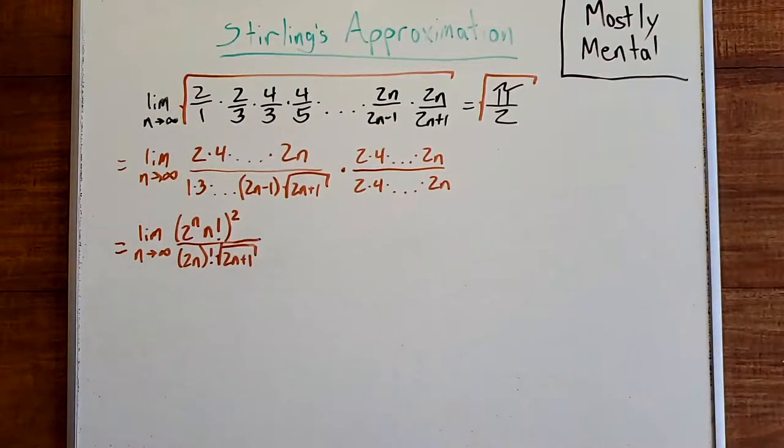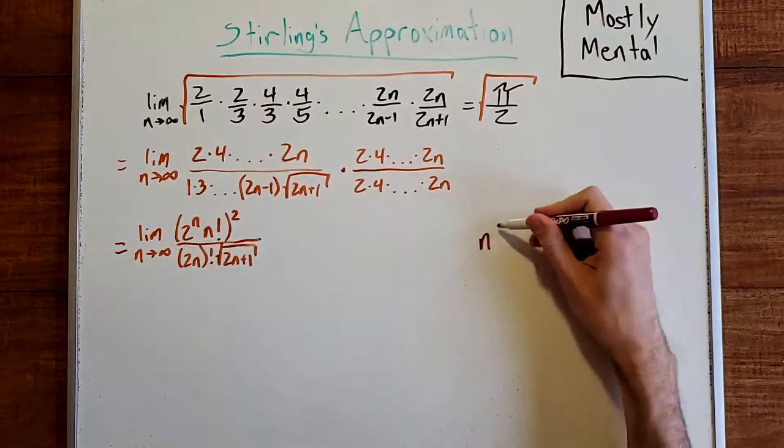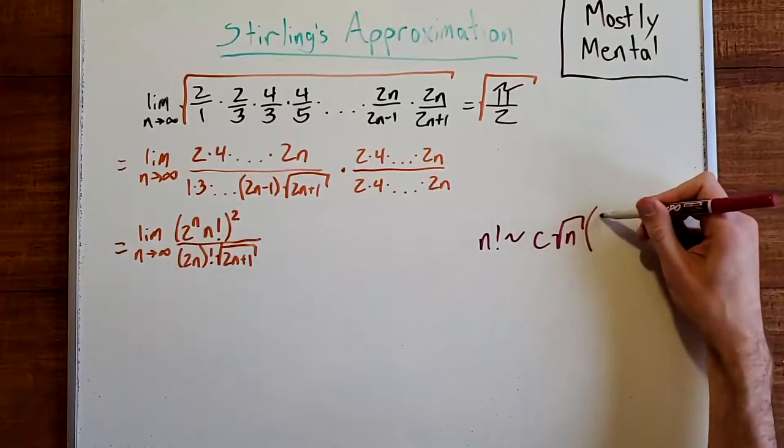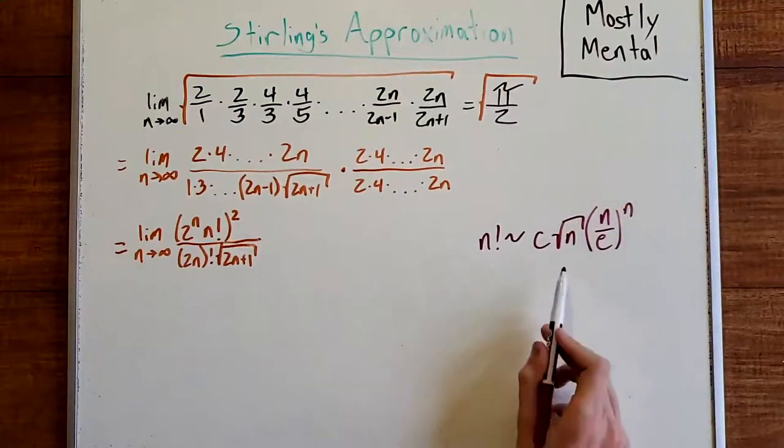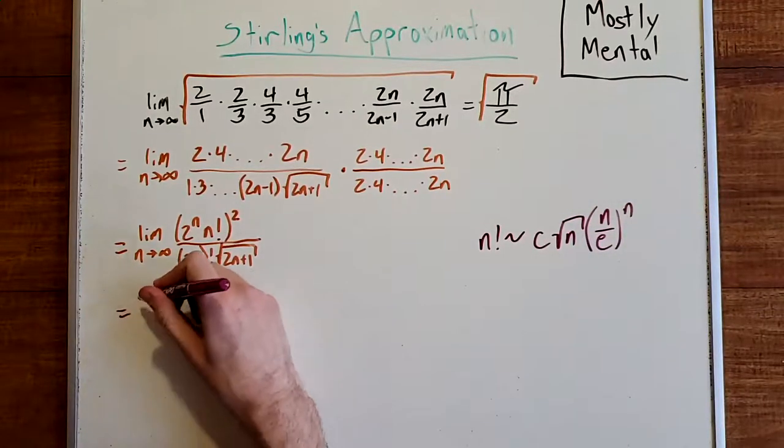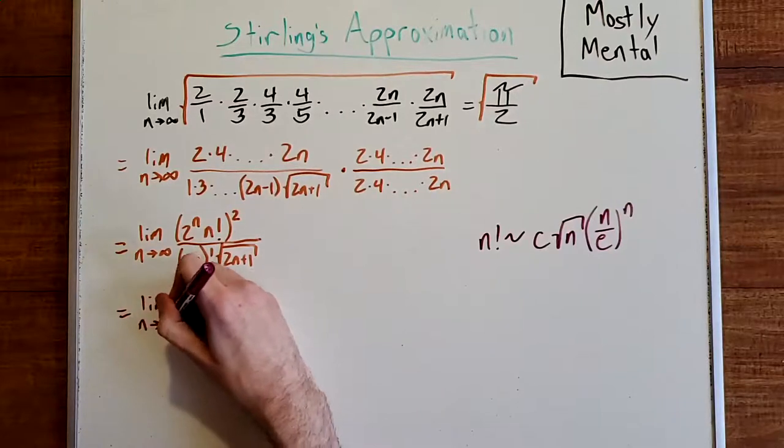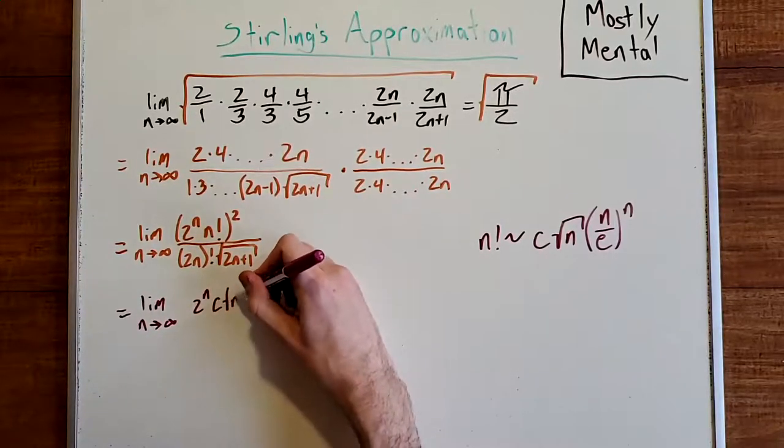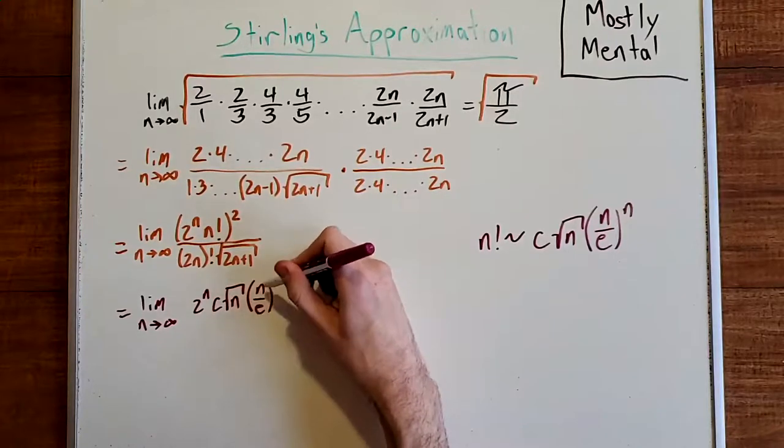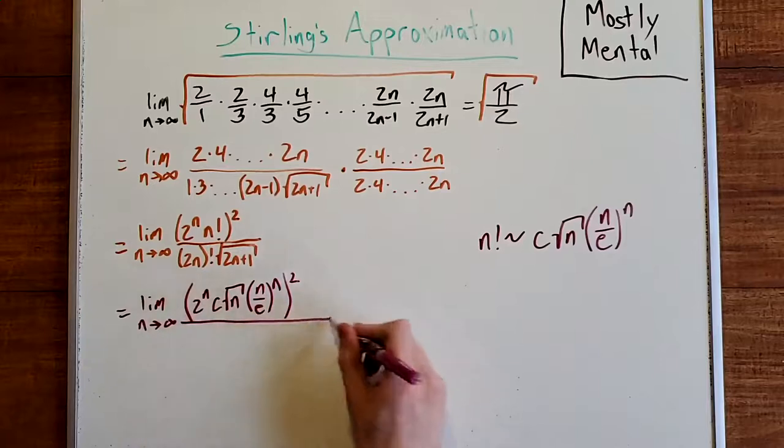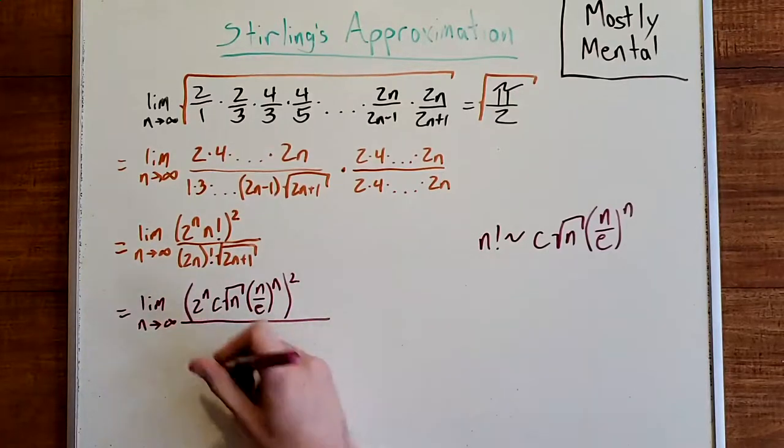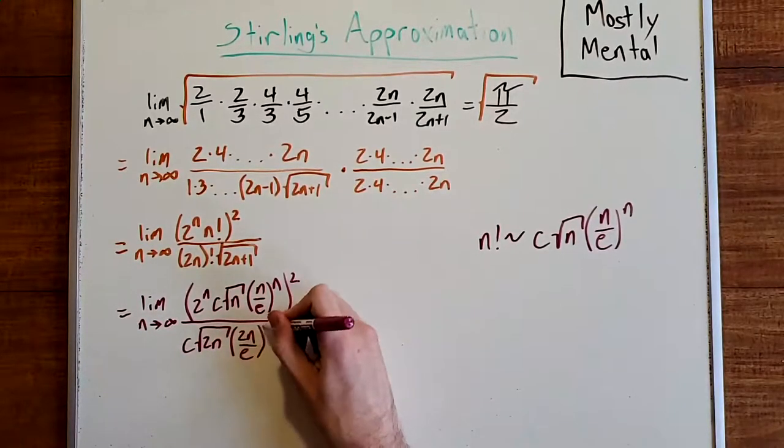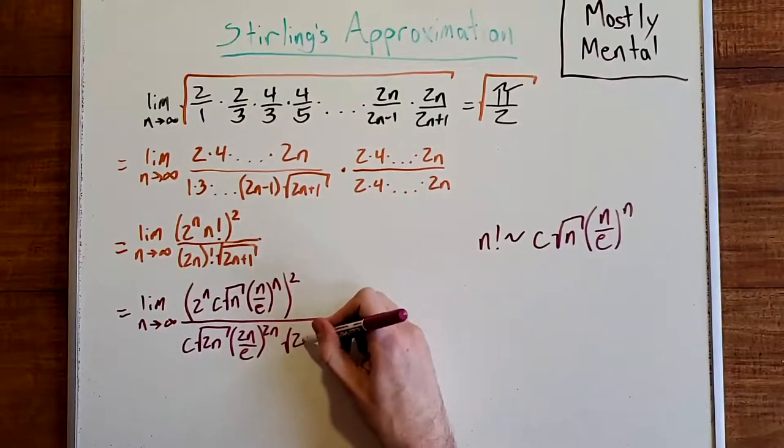Okay, and now we can look back at that estimate that we came up with a moment ago, that n factorial is approximately some constant times square root of n times n over e to the n. If we plug this in here, we end up, once again, with the limit, n approaches infinity, of 2 to the n times this thing, c root n times n over e to the n, all squared, all over 2n factorial, which, again, we can plug in here, get c root 2n times 2n over e to the 2n times the square root of 2n plus 1.